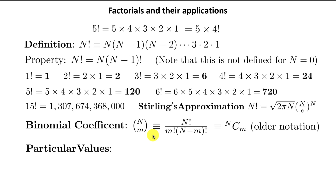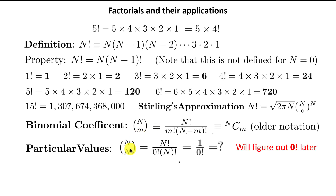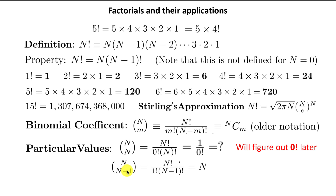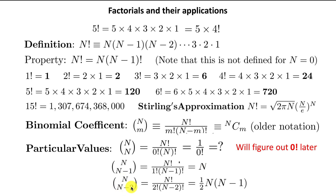Let's look at some particular values, starting with m = n. We run into a problem because we have n! over n! times 0!, but we haven't yet defined 0 factorial — we'll do that very soon. If instead of n we have n−1, that's just n! over 1! times (n−1)! which equals n. Similarly, (n choose n−2) is (1/2)n(n−1). In this way we can figure out all the binomial coefficients.